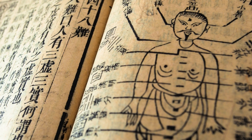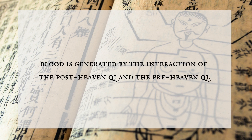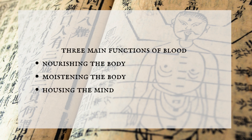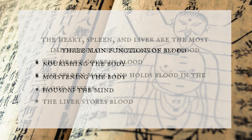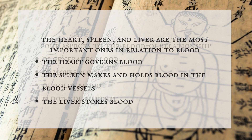Now let's summarize. Blood is a red liquid laden with rich nutrients and flowing in the vessels; it is one of the basic substances that constitute the body and maintains vital activities. Blood is generated by the interaction of post-heaven qi and pre-heaven qi. The three main functions of blood are nourishing the body, moistening the body, and housing the mind. The heart, spleen, and liver are the most important organs in relation to blood: the heart governs blood, the spleen contains and holds blood in the vessels, and the liver stores blood.